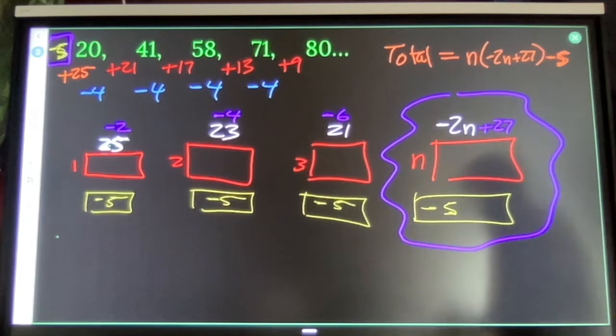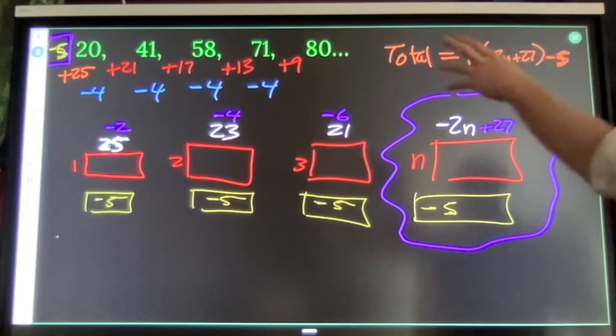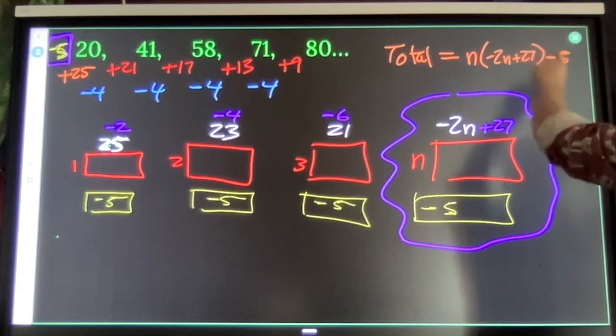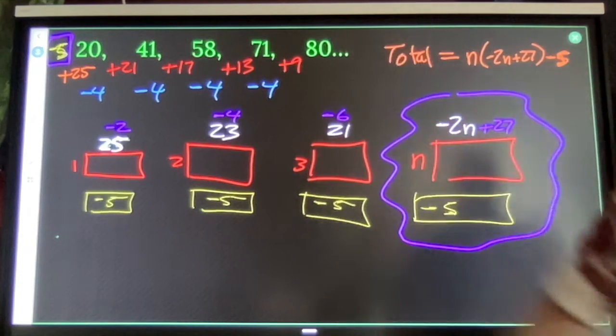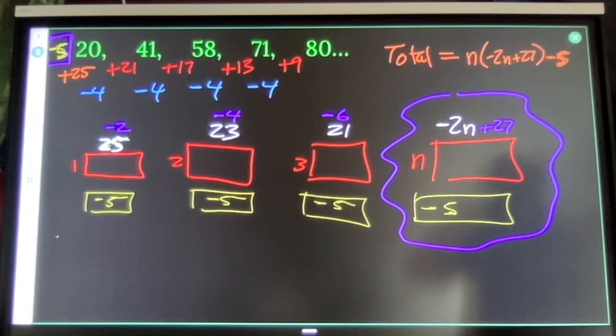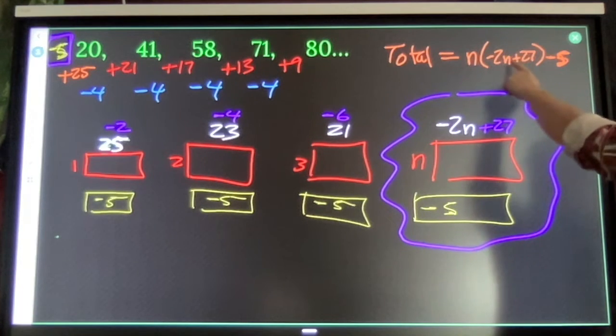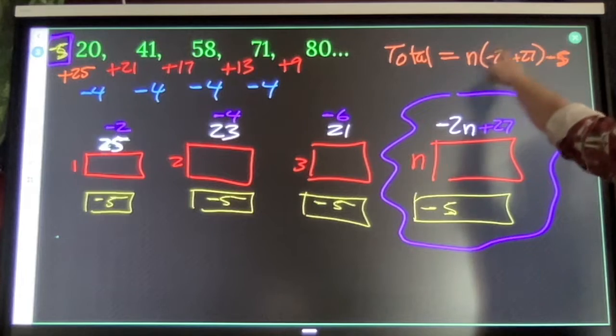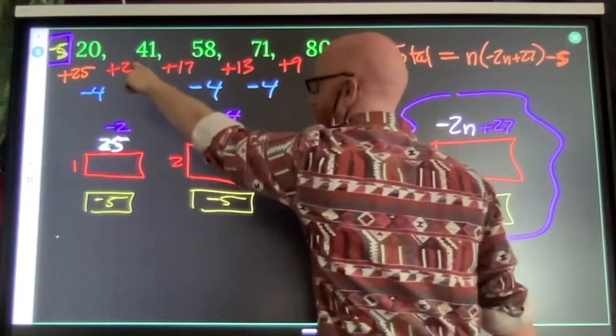If I'm not sure that I'm correct, I can check with the terms I already have. 0th term. 0 times this minus 5 is negative 5. The first term. Negative 2 times 1. That's negative 2 plus 27 is positive 25 times 1 is 25 minus 5 is 20.